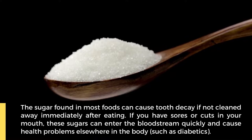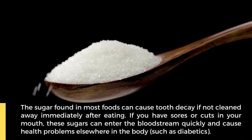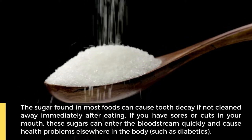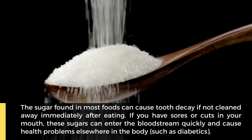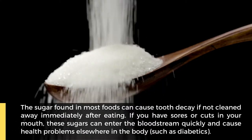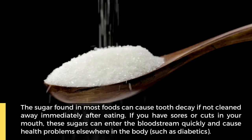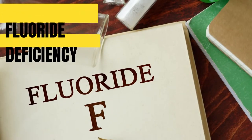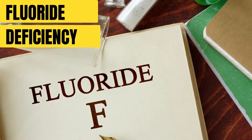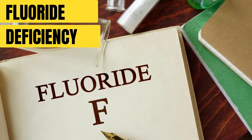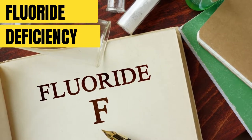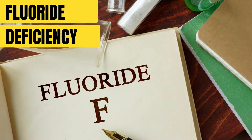Sugar found in most foods can cause tooth decay if not cleaned away immediately after eating. If you have sores or cuts in your mouth, these sugars can enter the bloodstream quickly and cause health problems elsewhere in the body, such as in diabetics. Fluoride deficiency — lack of fluoride exposure during childhood development stages, zero to three years old — is another factor, as fluoride prevents cavities by strengthening enamel.